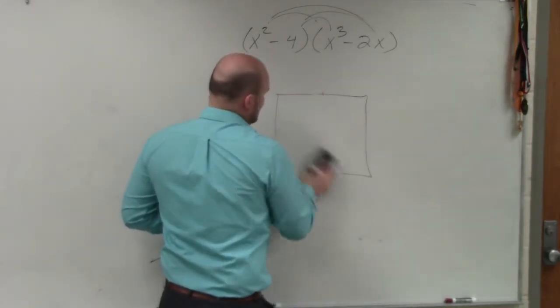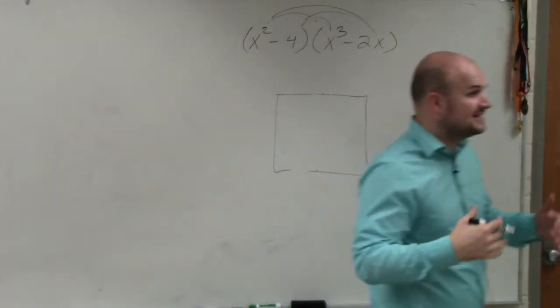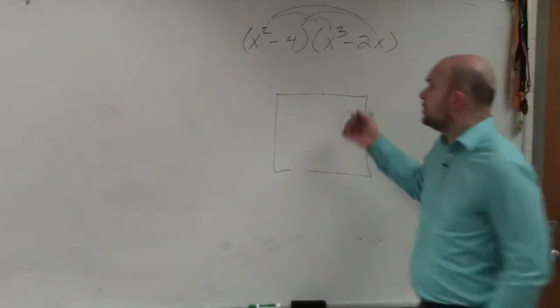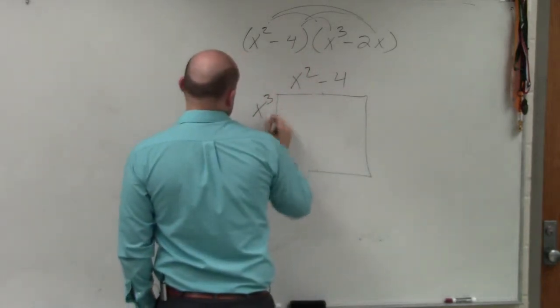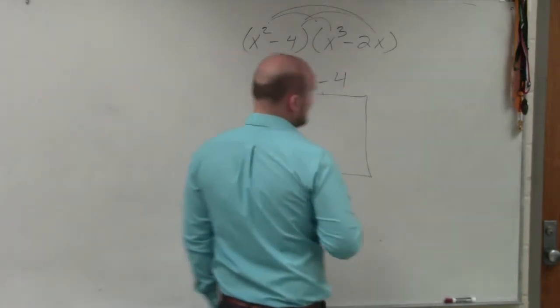If we want to find the product, then what we're really asking is we want to find the area. So for the area of the box here, what you're going to do is just write one length on one side and one length on the other side.